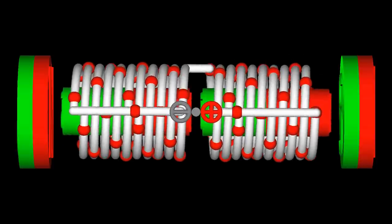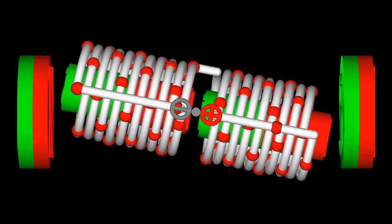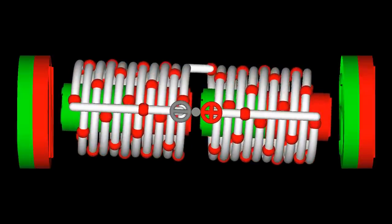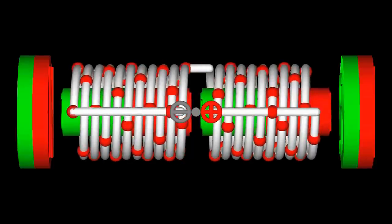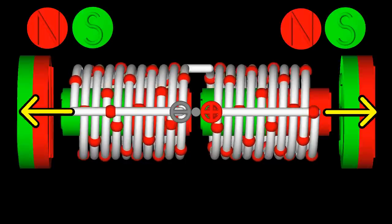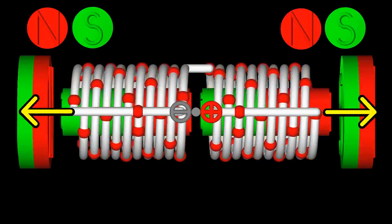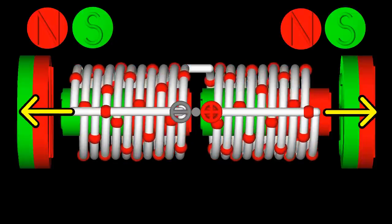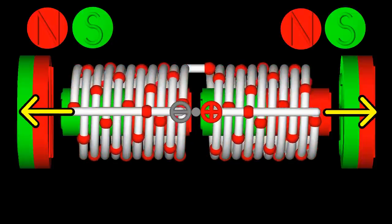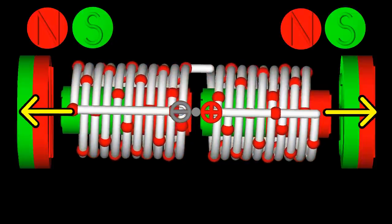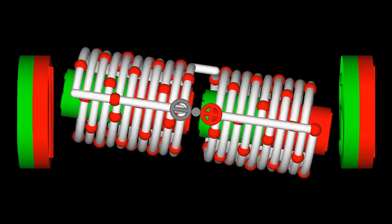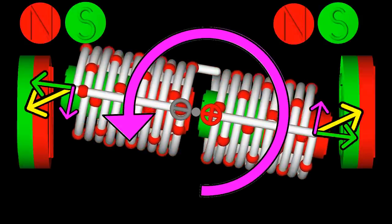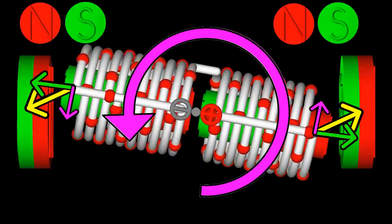Caused by inertia, the electromagnet oscillates around that rest position until the movement stops with horizontal alignment. Now attractive forces are acting between the electromagnet and the permanent magnets. Both vectors are pointing along the center line, thus no torque is produced. Whenever the electromagnet is deflected, the produced torque points back to that stable rest position.